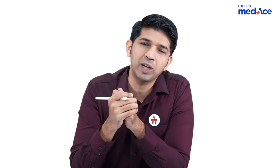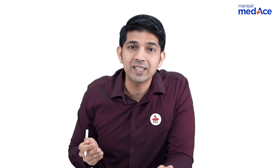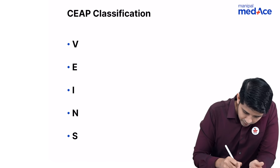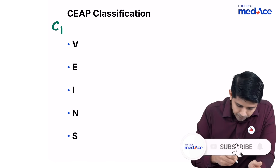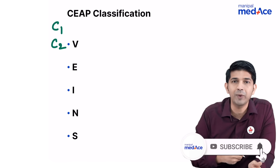Most of your questions are from the C, that is the clinical classification of varicose veins, where it is classified from C1 to C6. This is where a lot of confusion arises. So remember the mnemonic VEINS. All you have to do is write C1 on top and start from C2 for the veins.